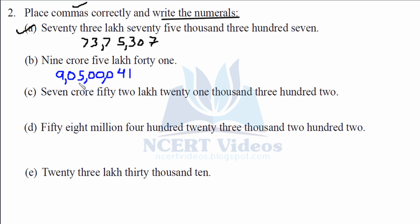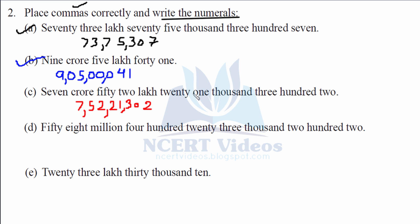Part c: 7 crore 52 lakh 21 thousand 302. This is Indian system again. We write 7 crore 52 lakh, then 21 thousand, then 302. That gives us 7,52,21,302. Now placing commas — after hundreds, then after lakhs, after 10 lakhs, and after 10 crores.